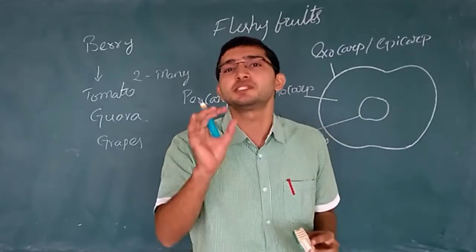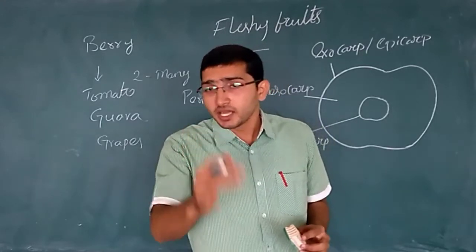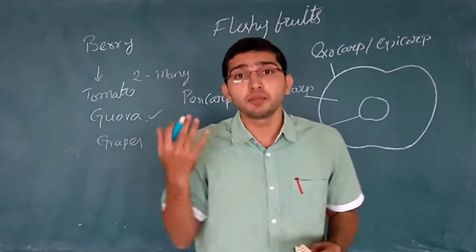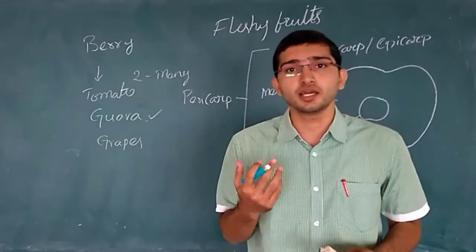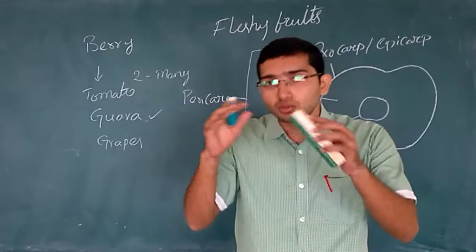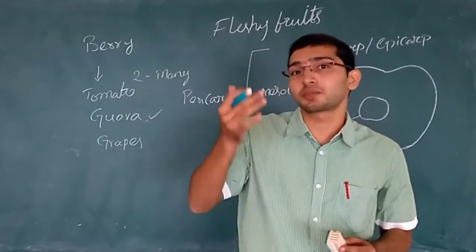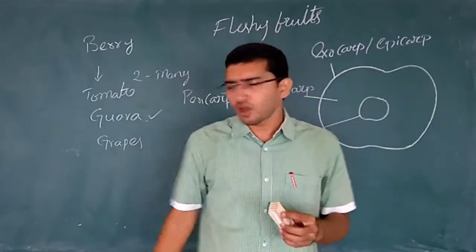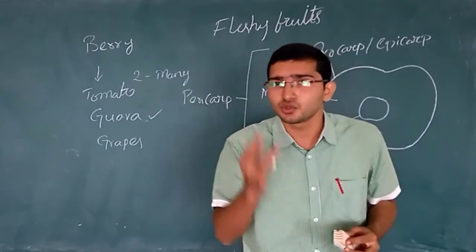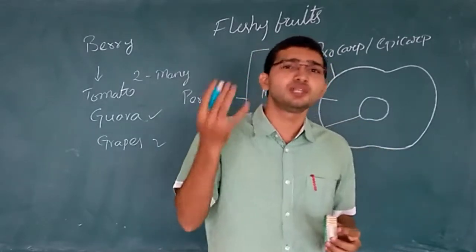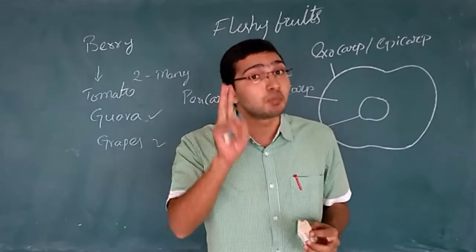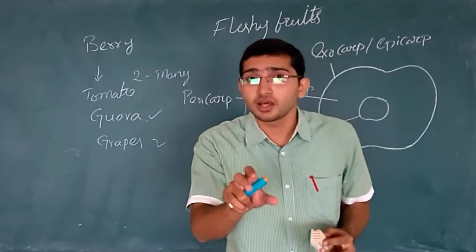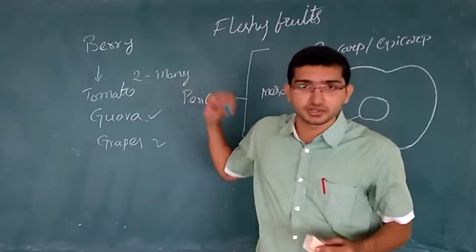In tomatoes, the outermost layer is the exocarp, and the middle mesocarp and endocarp are fused together, forming a pulpy mass with seeds. In guava, you often feel many seeds inside — it is multicarpellary, and the outer layer is hard while the inner mesocarp and endocarp are fused to form fleshy pulpy seeds. In grapes, you find two seeds, making it bicarpellary, with two carpels present in the fruit.